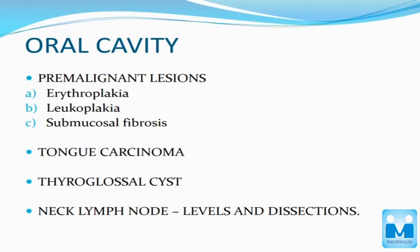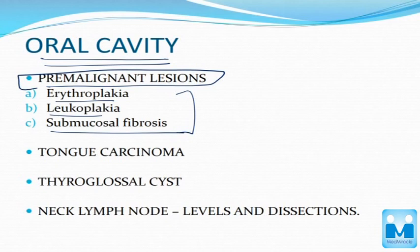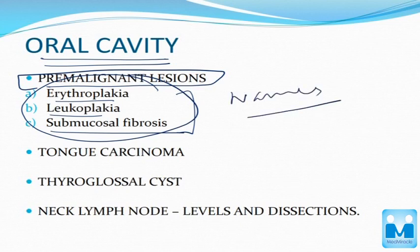Coming to the oral cavity, the most important topic in this section is pre-malignant lesions. Erythroplasia, leukoplakia, and submucous fibrosis are the most important. You have to read everything because a question like 'exclude which of the following is not a pre-malignant lesion' may come. Focus mainly on pre-malignant lesions, since oral cavity cancer is one of the leading cancers in India.